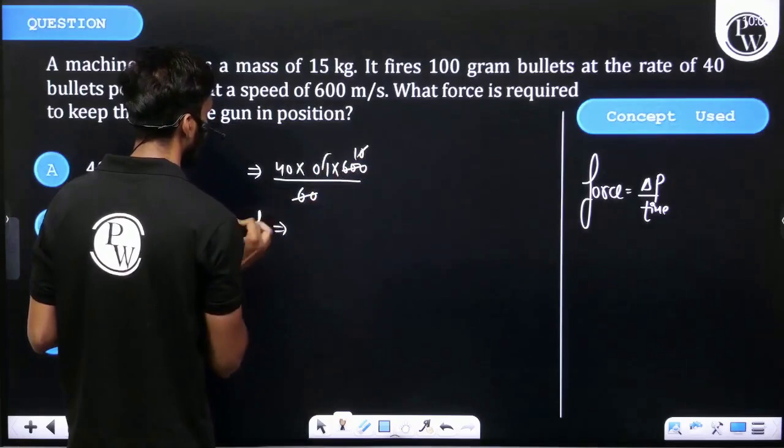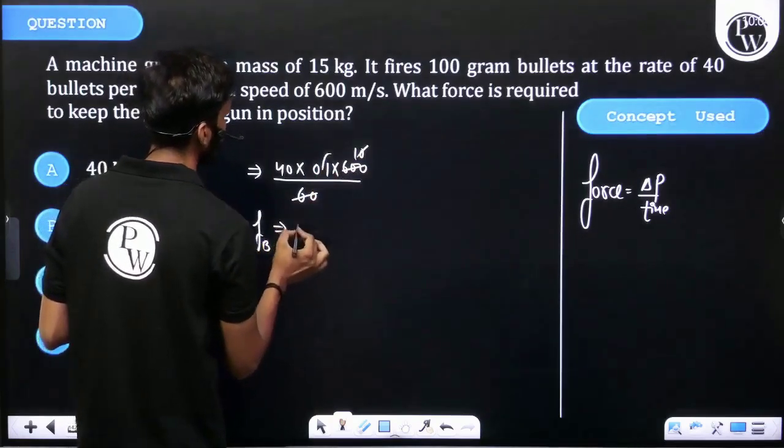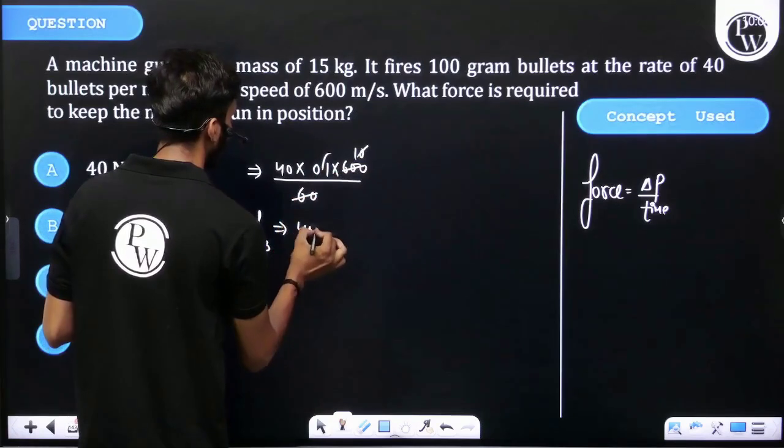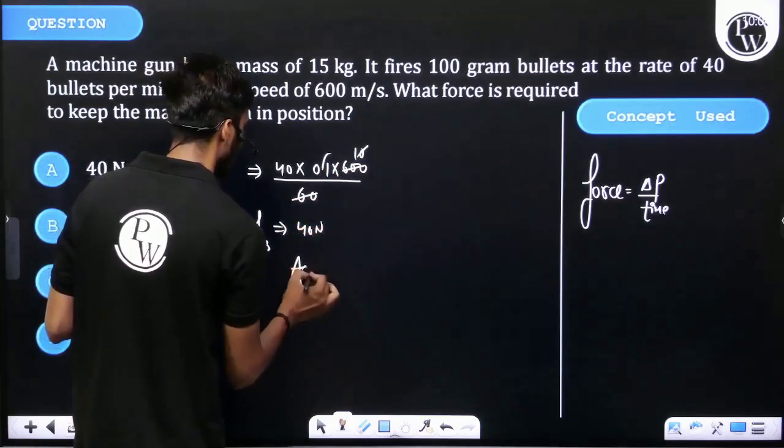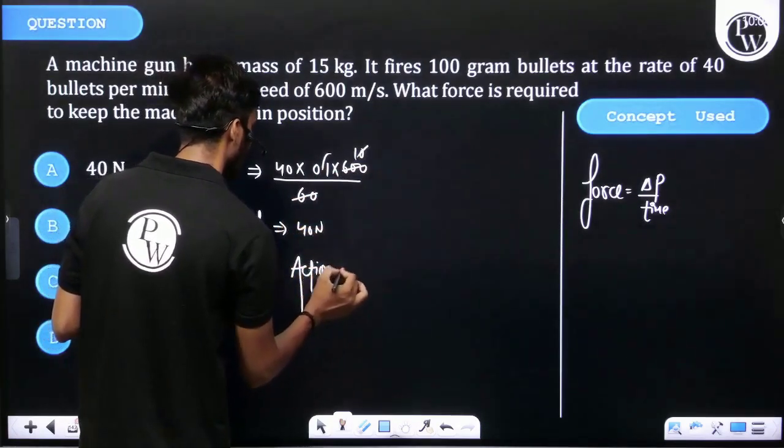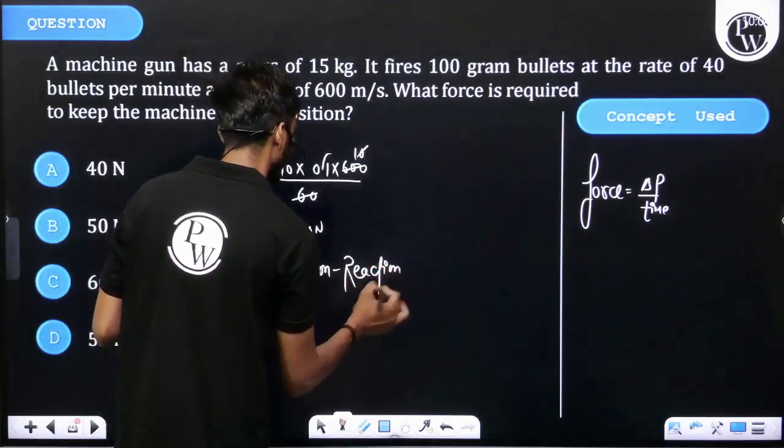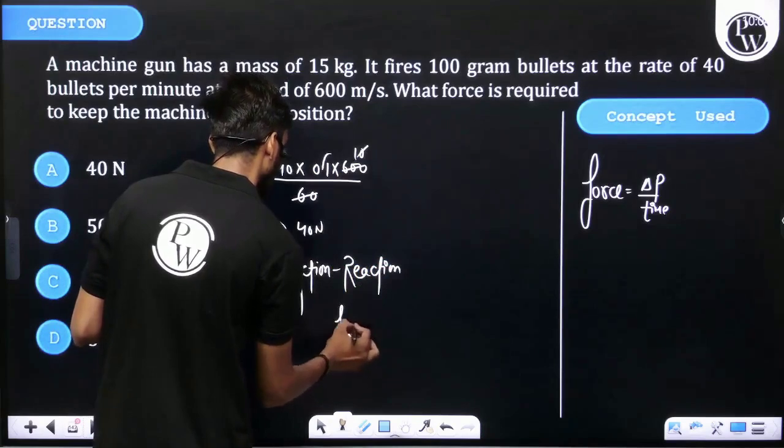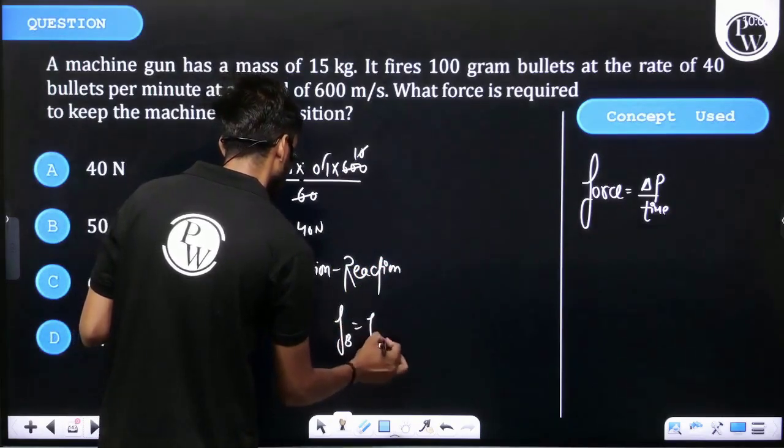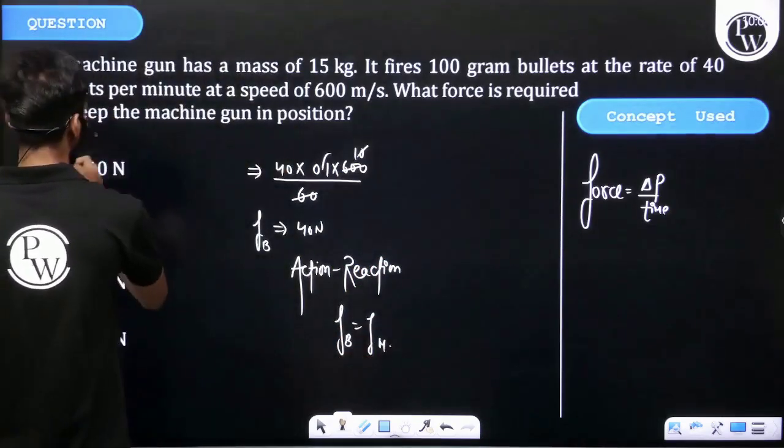And from Newton's action-reaction law, we can write: force on bullet is equal to force on machine. Then option number A is correct.